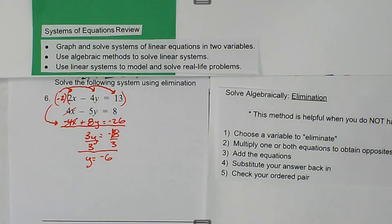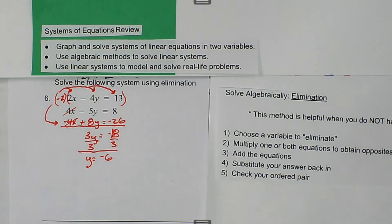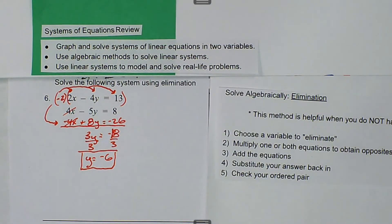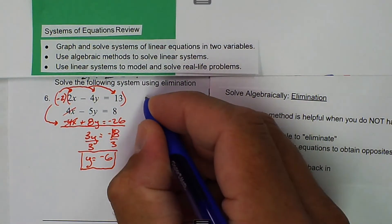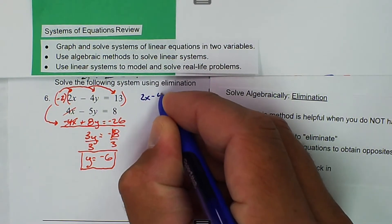So now we can take the top equation and we can substitute our y into the top equation, just like we did in our previous substitution after we found one of the variables.